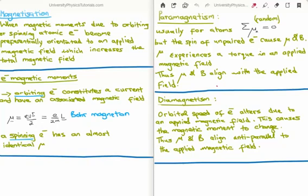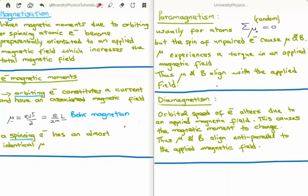For an orbiting electron around a nucleus, this constitutes a current with an associated magnetic field — we discussed this when we discussed the Bohr magneton. So mu is the dipole moment and that's the charge e times the speed of orbit v times the radius r divided by 2, or we can rewrite this in terms of the angular momentum l. It's important to remember that e is going to be minus for an electron. A spinning electron — analogous to the earth spinning on its own axis — also has its own magnetic moment, and the magnetic moment due to a spinning electron is almost identical to that of an orbiting electron.